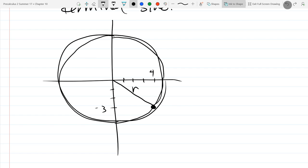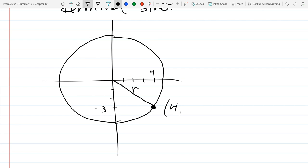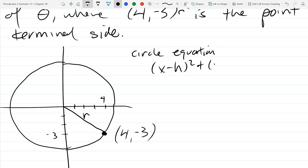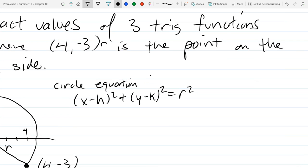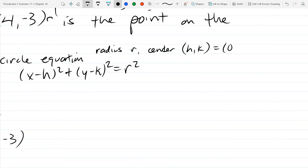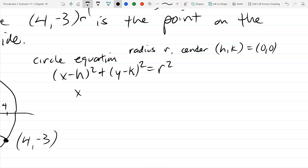If you remember from Precalculus 1 class, here's our circle equation: (x-h)² + (y-k)² = r², with radius r and center (h,k). Now, I want a center at the origin, so the good news is (h,k) is (0,0), so this simplifies to x² + y² = r².